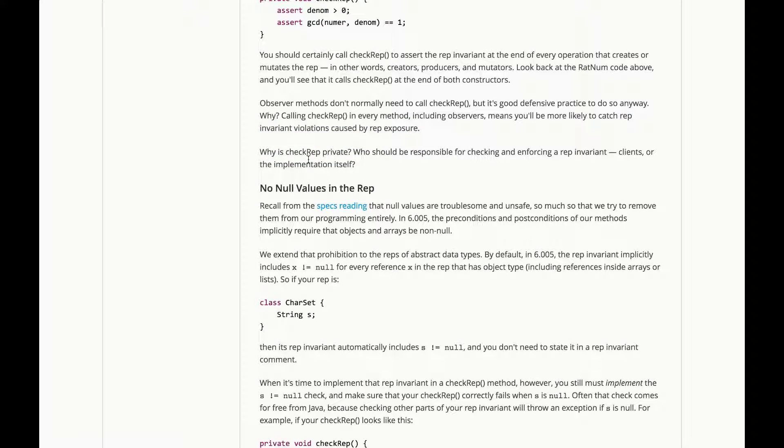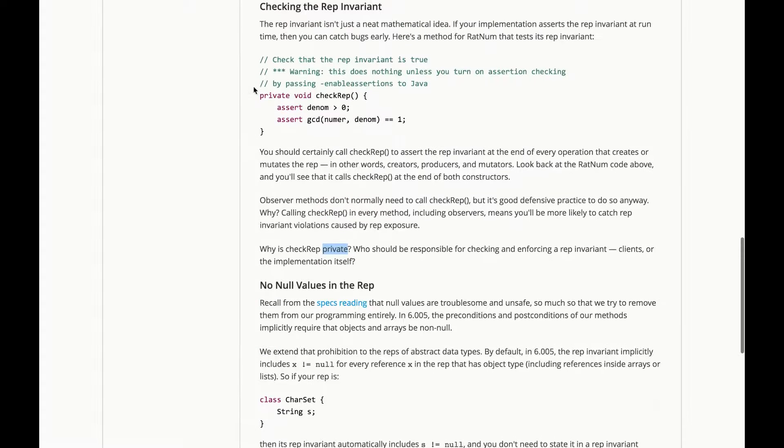Now, why is CheckRep private? Who should be responsible for checking and enforcing a rep invariant? The clients or the implementation itself?